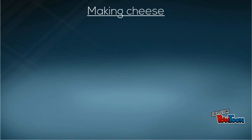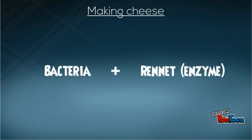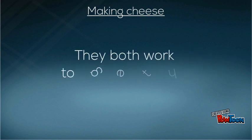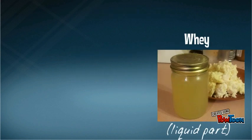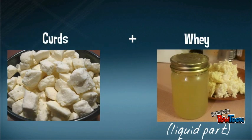When making cheese, bacteria are again added to milk along with the enzyme rennet. The enzyme acts with bacteria to clot the milk and make curds and whey. The whey is the liquid part which is drained off, and the curds are the solid bits which are then used to make cheese.